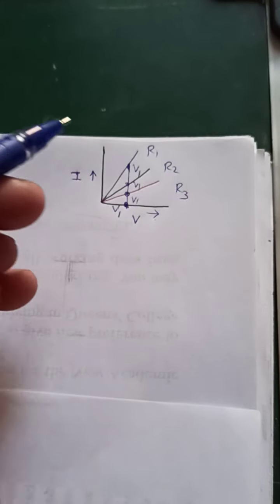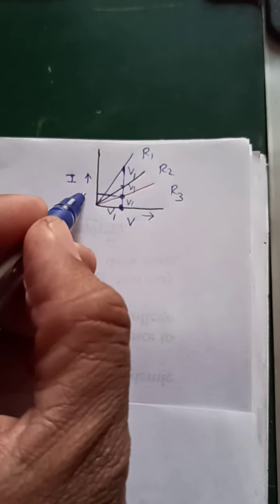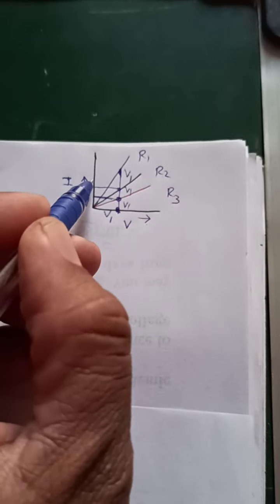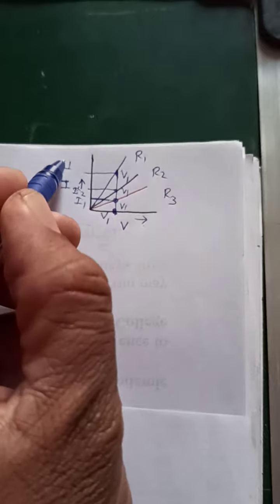When you draw the line parallel to the X-axis, here you will get a current I1. You will get a greater current I2, meaning I2 will be more than I1. And in the third case, you will get I3.